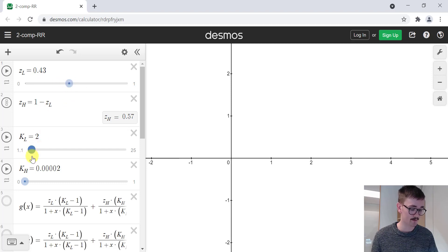We also have the k values for the light and the heavy component as shown here. These can also be changed. By just writing out the Rachford-Rice equation, we get the following curve.